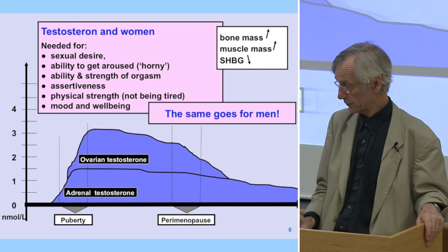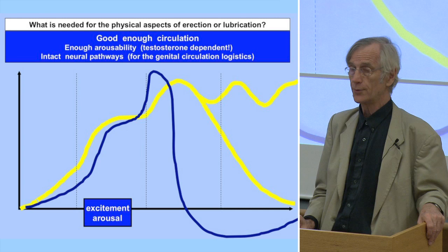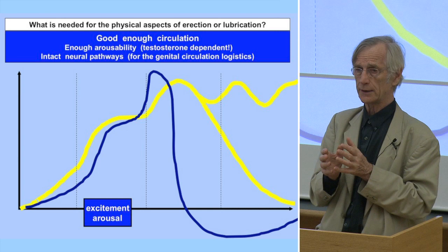And of course bone mass and muscle mass — that is very important for people in rheumatology and orthopedics, but also for kidney patients. Your muscles and your testosterone are closely connected.